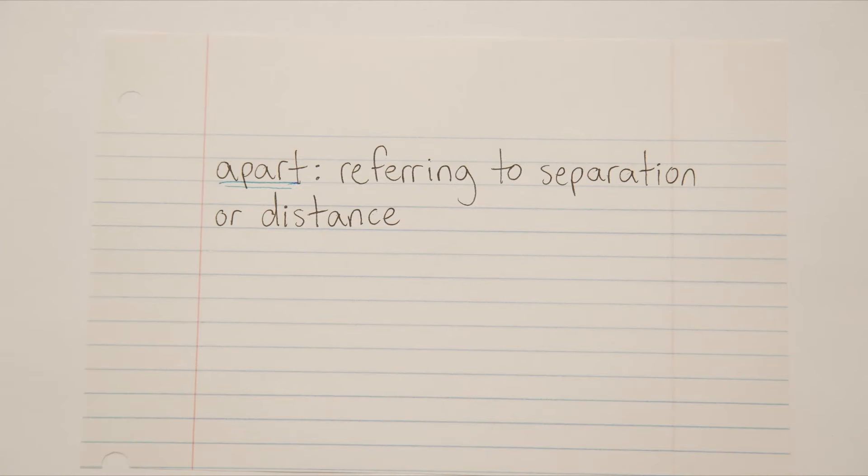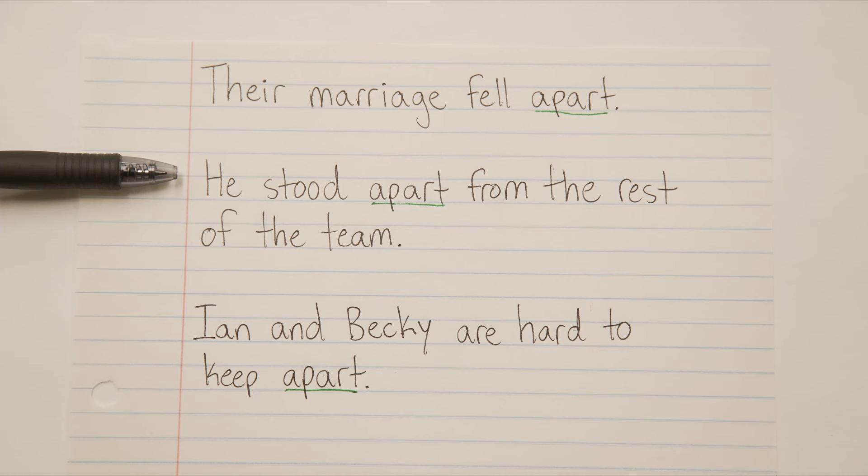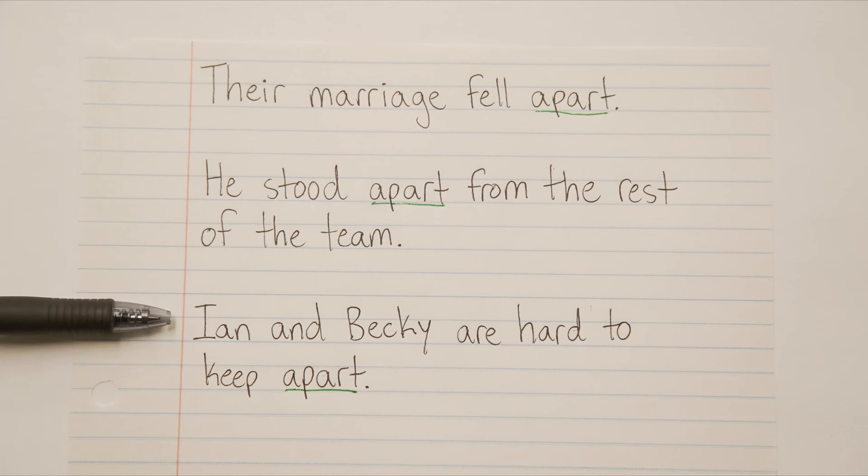And apart, one word, means the opposite. Apart, one word, refers to separation. Their marriage fell apart, meaning it broke, there was a breakup, a divorce. Or he stood apart from the rest of the team, separate from them, away from them, disconnected. Or Ian and Becky are hard to keep apart, meaning that they are hard to separate, hard to keep away from each other.